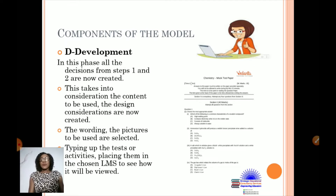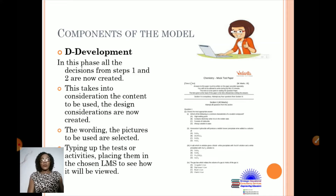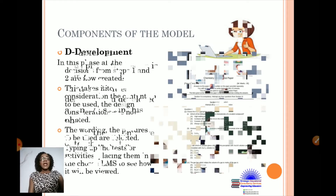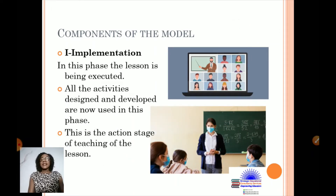The wording and pictures to be used are selected. If you've decided to do a test, you will type it up along with your activities and place them in the chosen platform to see how it will be viewed by students. It could also involve quizzes using tools like Kahoot — you may invite friends to help you test the app, check for glitches, and confirm it works effectively. You may even ask students to do a pilot run before moving on.